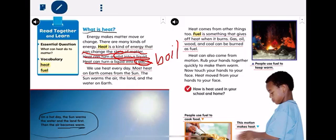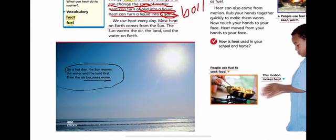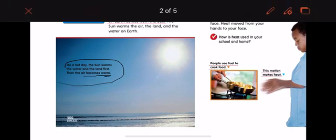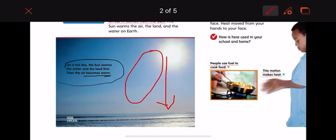Okay, let's look at this picture. On a hot day, the Sun warms the water. The Sun warms the water and the land first, then the air becomes warm. The air becomes warm.